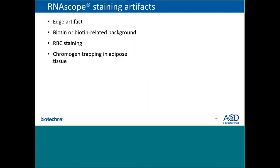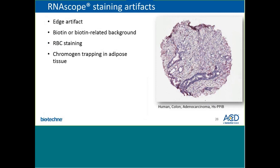While RNAscope is a very powerful tool, there are occasions when those using the technology are faced with various artifactual staining patterns. As with immunohistochemistry, there may be edge artifact where there may be more signal at the edges of the tissues. In this image, there is some minor edge artifact, and the focus should really be placed on scoring of the tissue in the cells away from the edge rather than at the edge. This is just a result of chromogen trapping at the edges of the tissues — whereas in the center, you get the true signal representative of the expression of those RNA molecules.